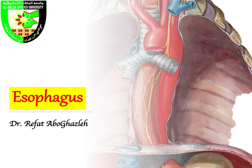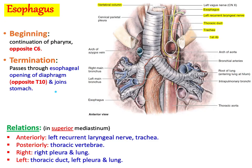This is a brief recording about the anatomy of the esophagus. We will start with the beginning and termination of the esophagus, then explain its relations, innervation, and blood supply.